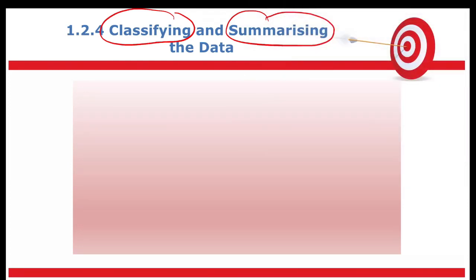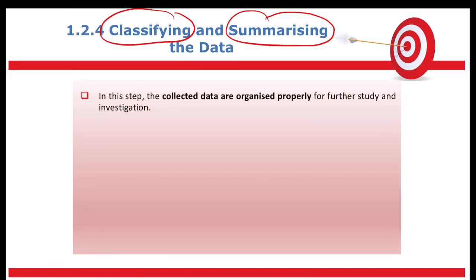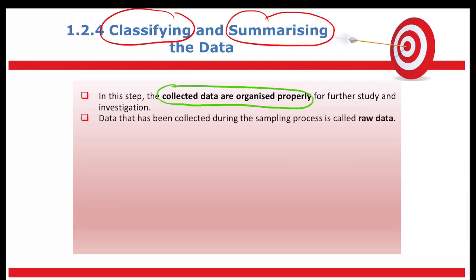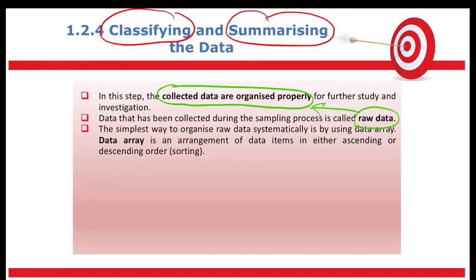In step four, the collected data are organized properly. The data that has been collected is called raw data, and the raw data must be organized properly. The simplest way to organize it is by using a data array — meaning you use rows and columns in Excel.